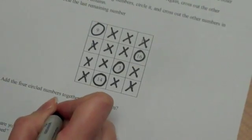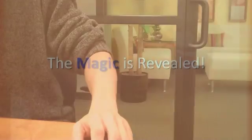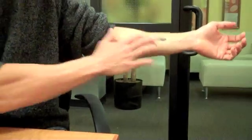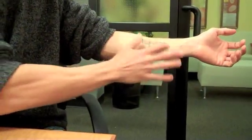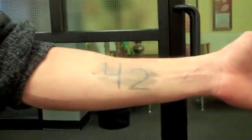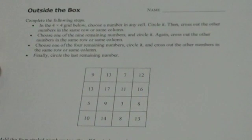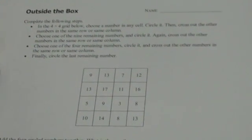Now add the four numbers that you have. Every time that students perform this trick, they'll get the same answer no matter what numbers they choose. They will always get a result of 42.